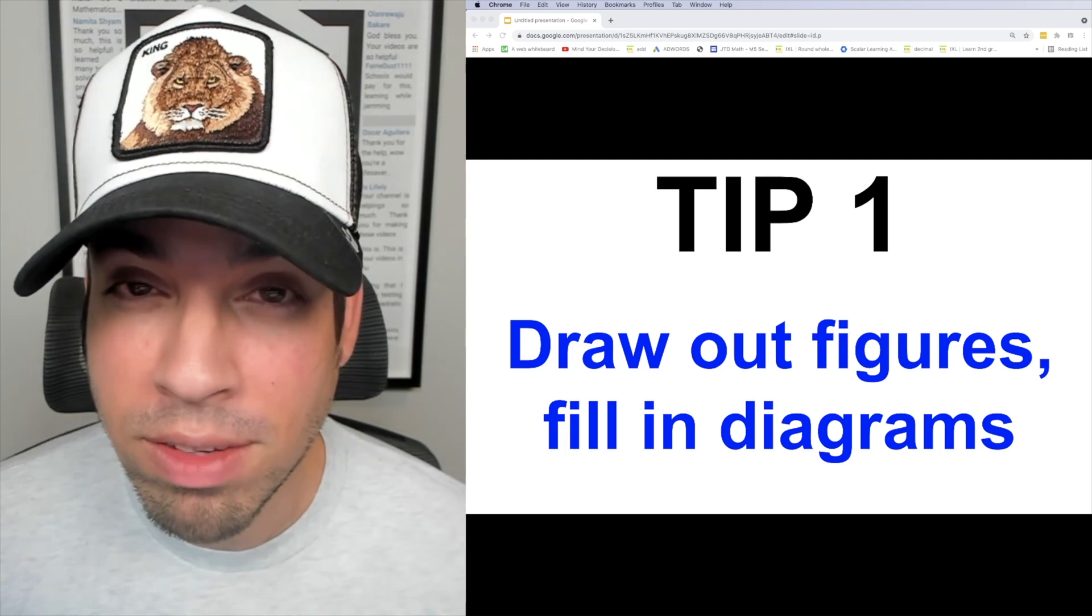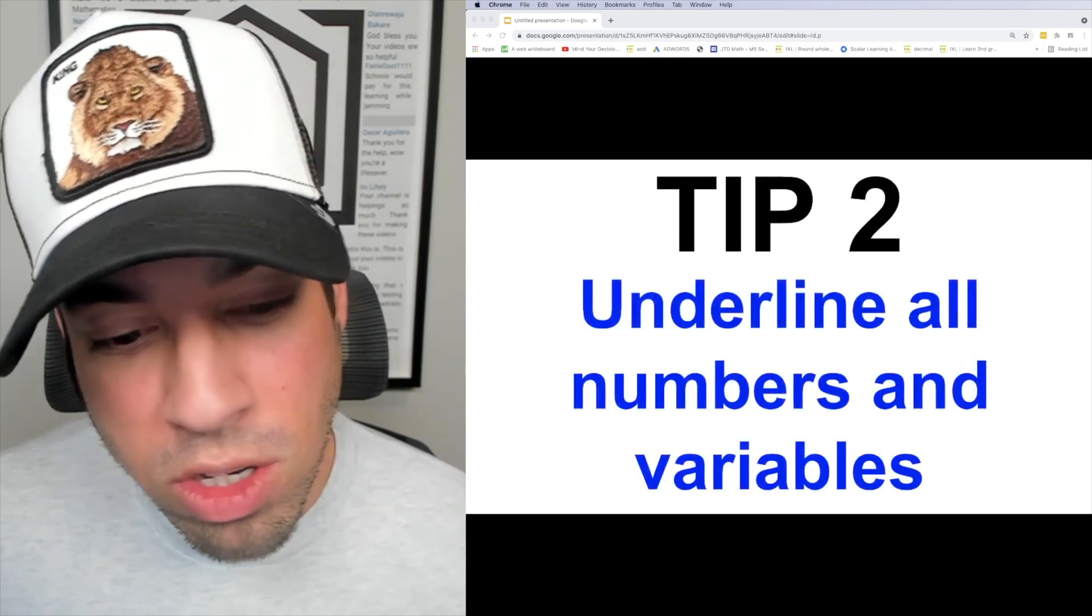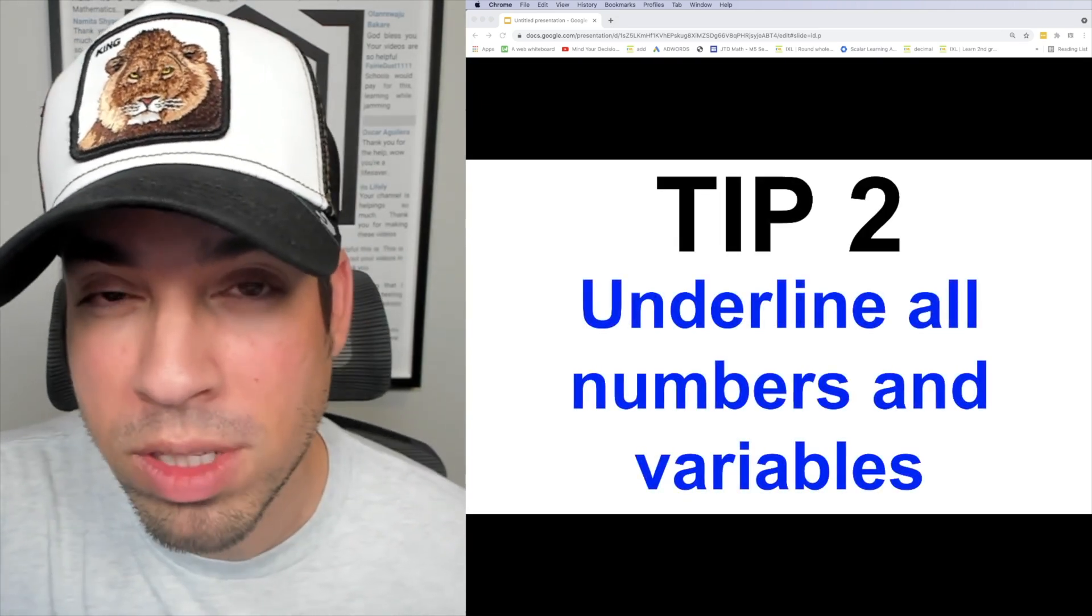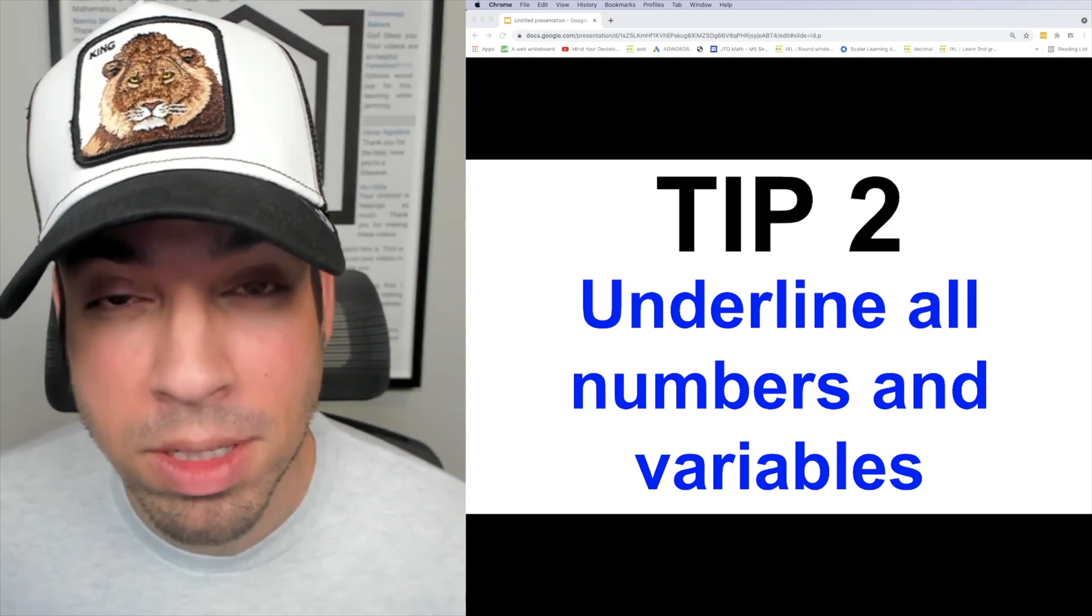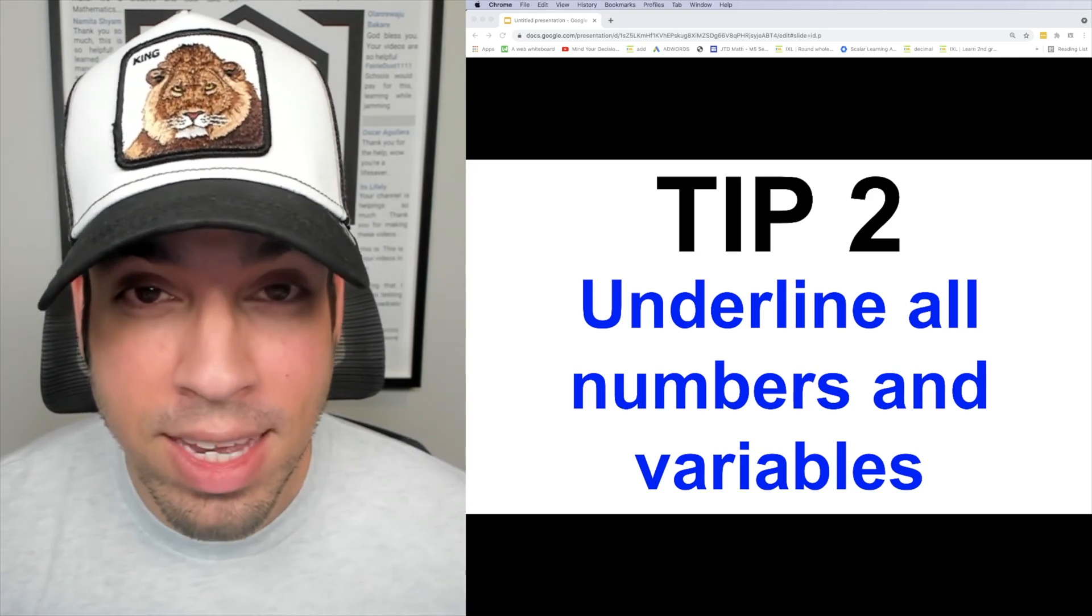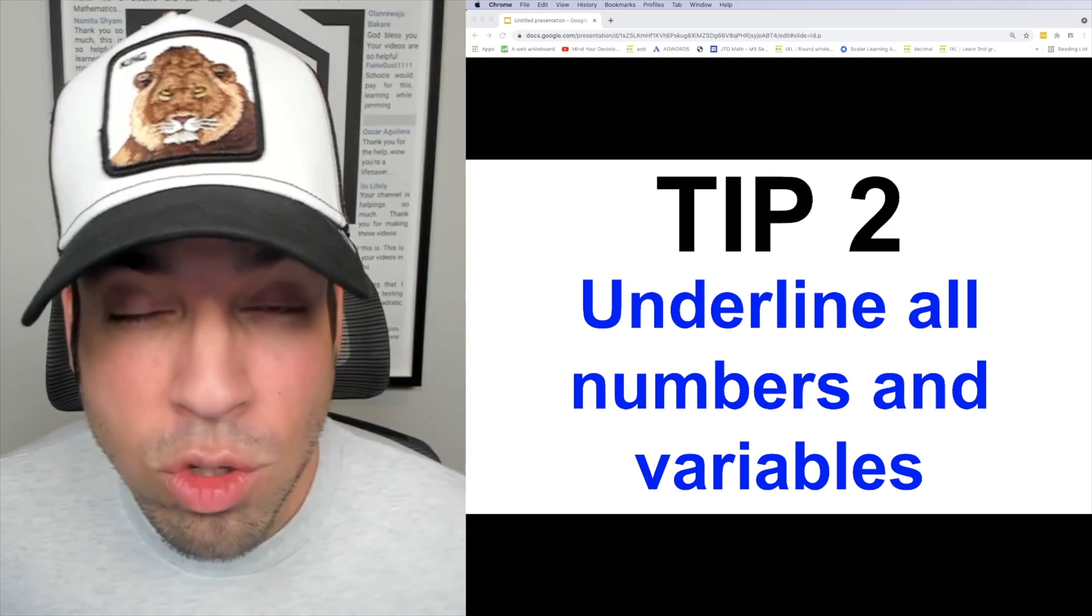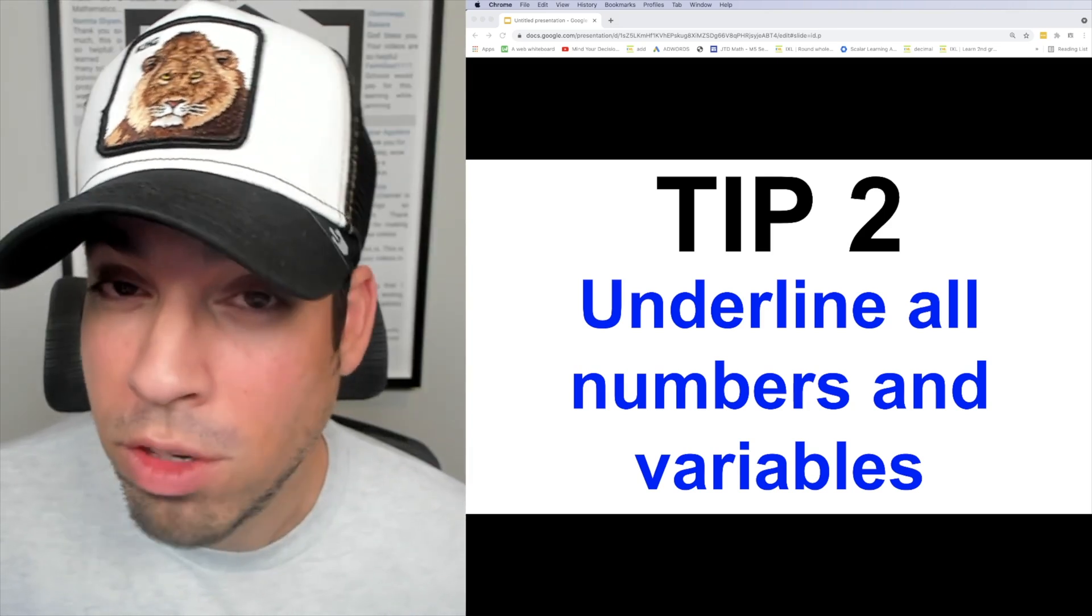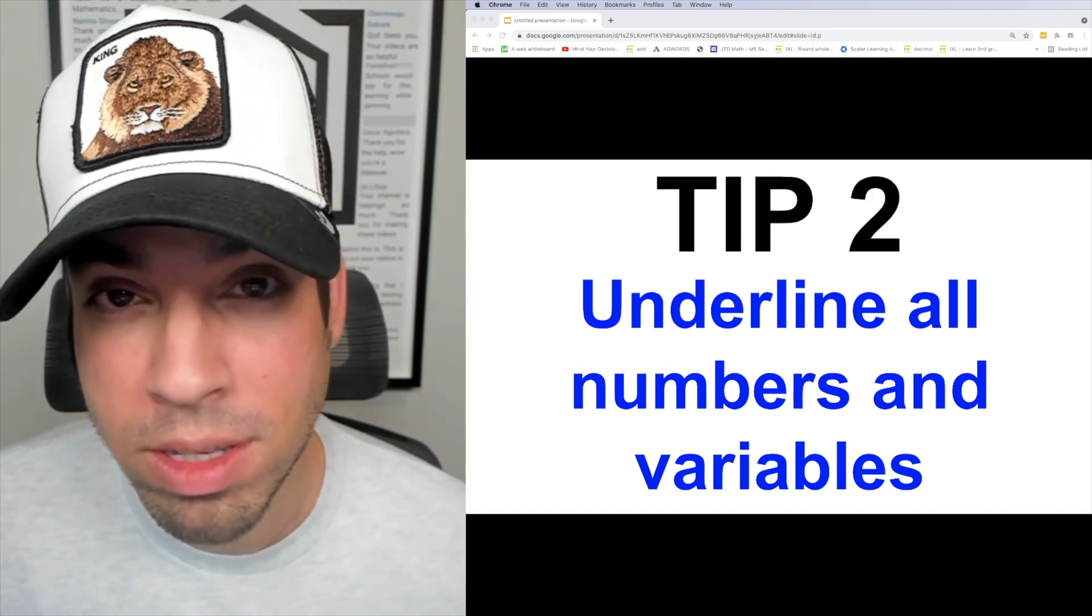Tip number two is to underline all numbers and variables. This will make sure that you don't miss any of the facts in the question prompt. What you really want to be on the lookout for is those few cases where they actually say a number but they write it in letters. For example, they'll say the number two as T-W-O. Getting these questions right means it's crucial that you don't miss any information, and this is the key to catching everything.